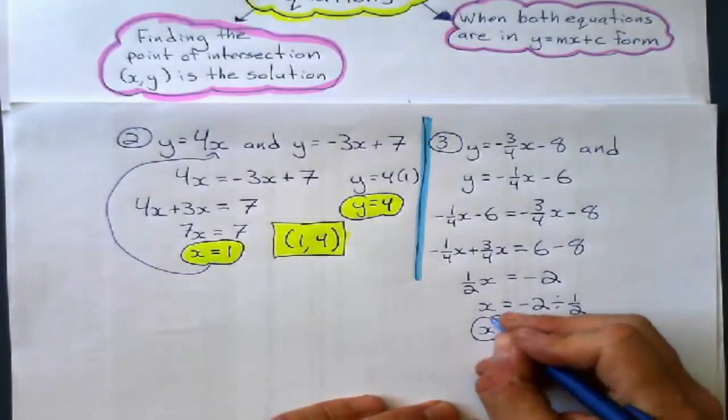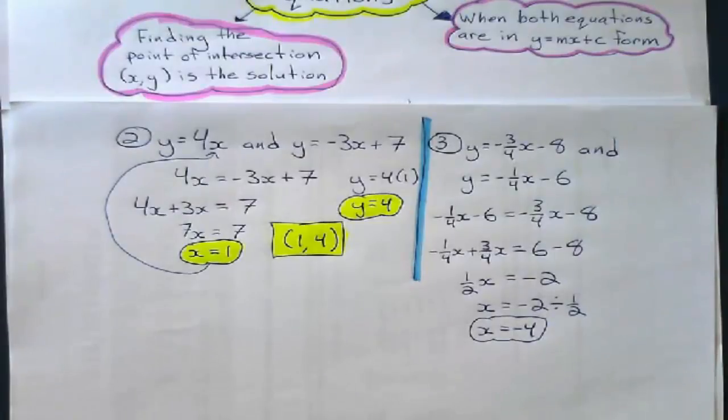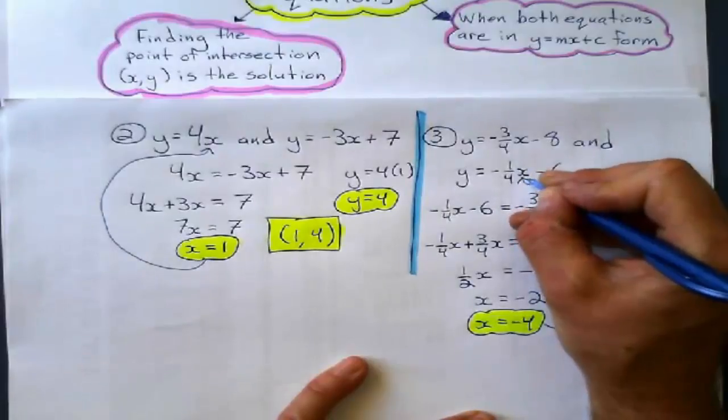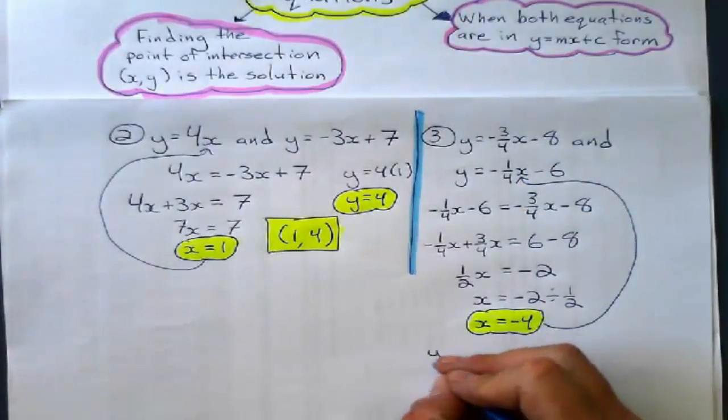Negative 4 is, that's half my solution. Now, I take that and substitute it into any equation I want. They both have fractions. It doesn't matter. I'll put it into that one, and I'll find my value of y.